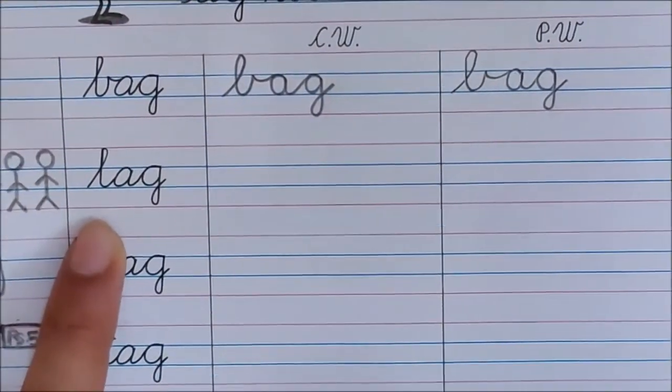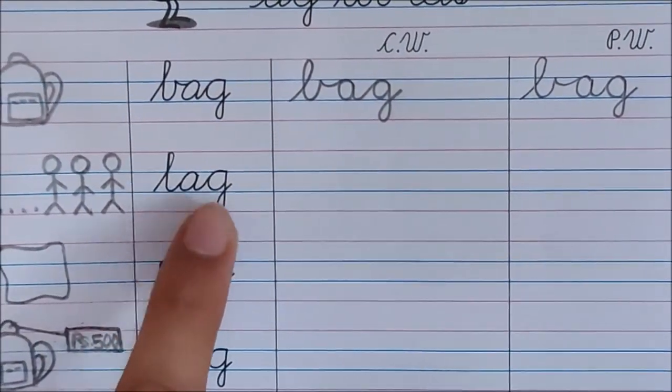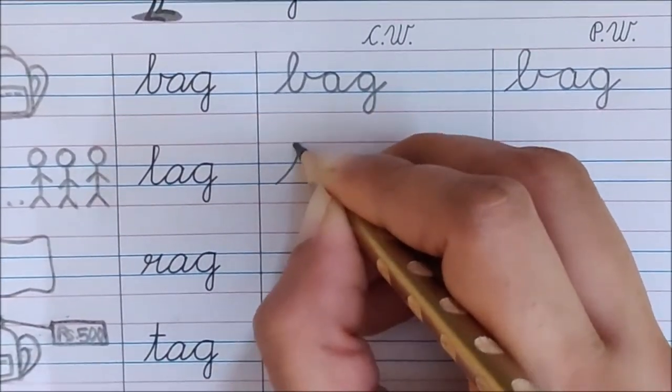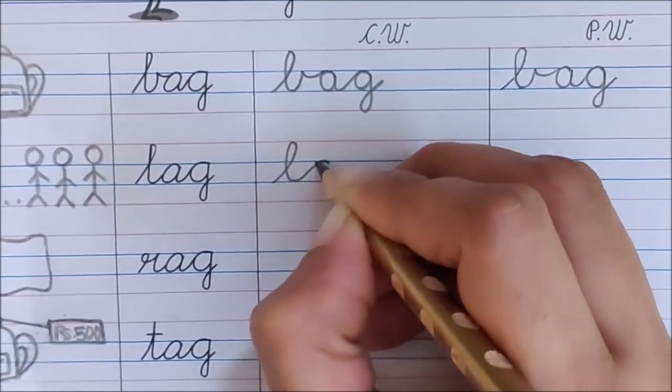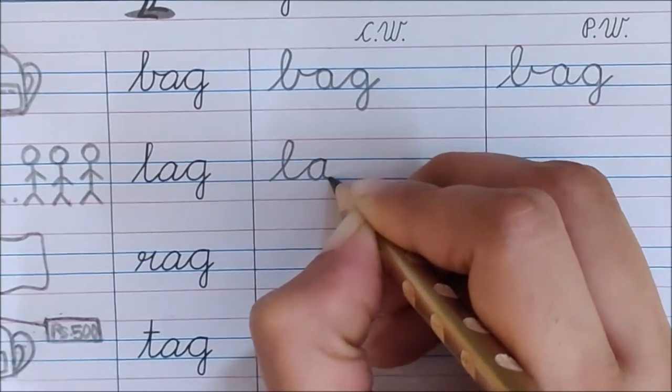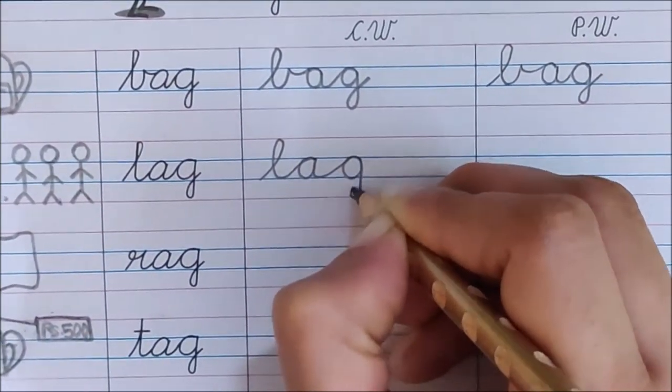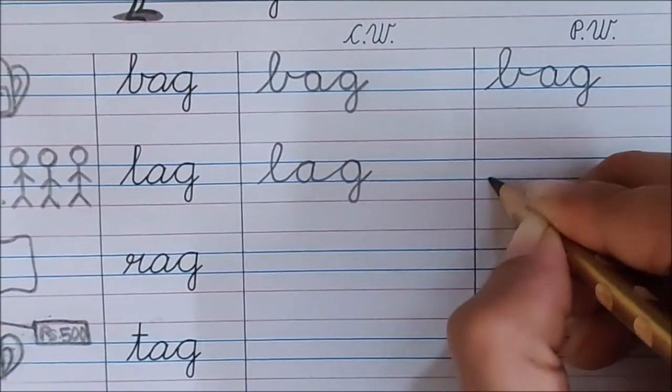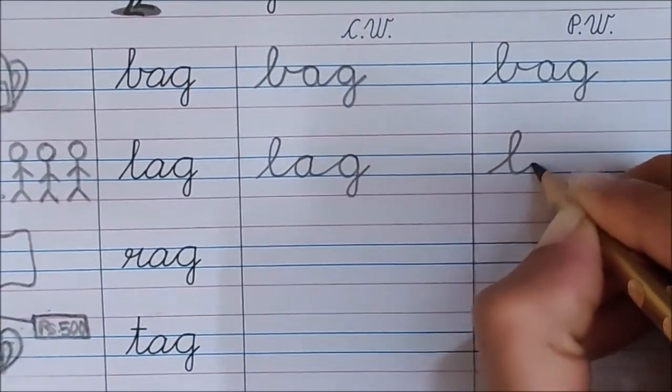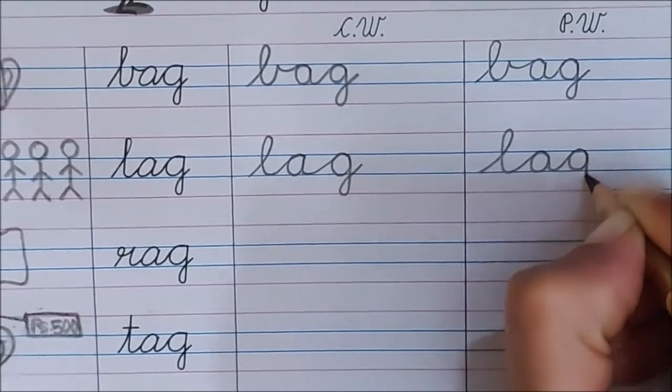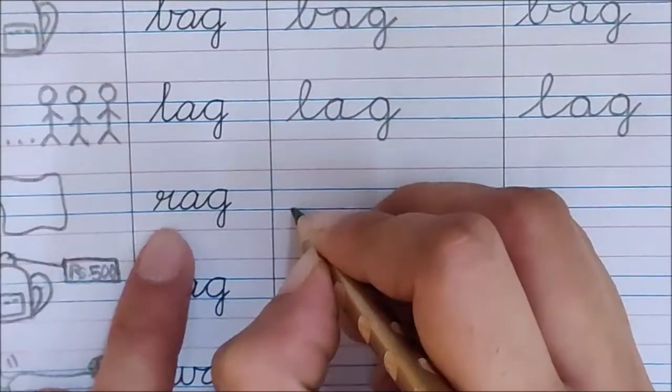Let us go to the next word. L, A, G, lag. So say and write. L, A, take the tail up. G, lag. L, A, G, lag.